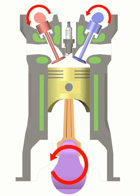The four separate strokes are termed intake, also known as induction or suction. This stroke of the piston begins at top dead center and ends at bottom dead center. The intake valve must be in the open position while the piston pulls an air-fuel mixture into the cylinder by producing vacuum pressure through its downward motion. The piston is moving down as air is being sucked in.